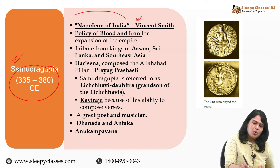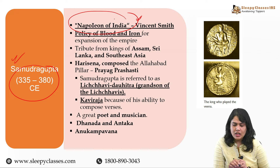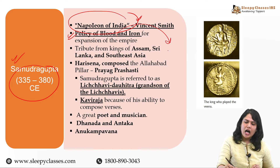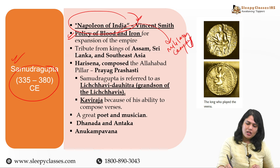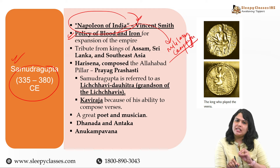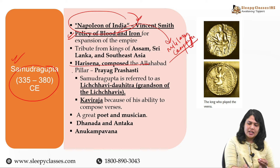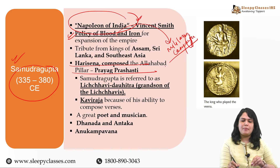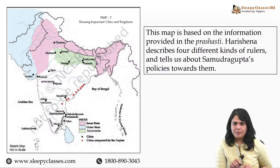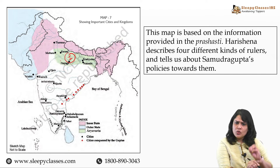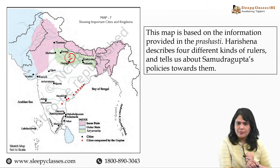Vincent Smith woh Samudragupta ko Napoleon of India kehte hain, empire ke extension and expansion ke liye. Inhon ne policy of blood and iron - outright military campaign - uska istemaal kiya. Aur hum dekhte hain ki inke jo court poet hain, Harisena, unhon ne inki tarif mein ek precious prashasti likhi hai - ek eulogy likhi hai - jo Allahabad pillar par inscribed hai. Aur yahan par humein pata chalta hai inke military conquests ke baare mein. Inhon ne apne military conquests mein ek four-fold approach ko follow kiya.